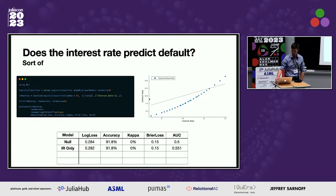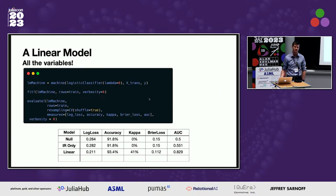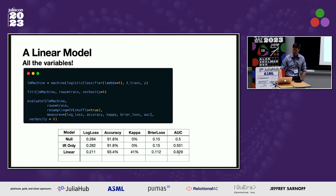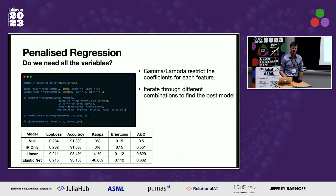Now let's throw all variables into a logistic regression. We create the logistic machine, pass in all the data, train on the training set, and evaluate. We get a 2% increase in accuracy — the machine learning is actually doing something. The loss metrics have gone down slightly and the AUC has gone up, confirming there is real information in all the variables we've included to help predict which loans will default.